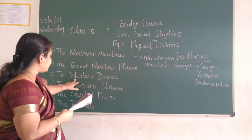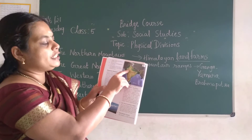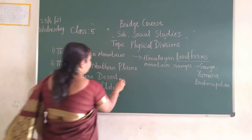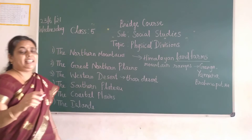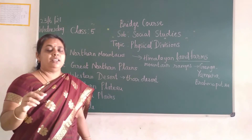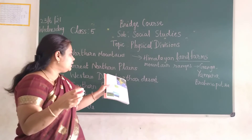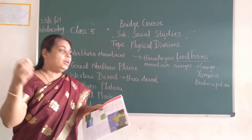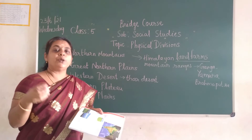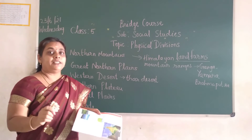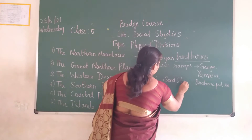The next one is the western desert. On the Indian map, on the western side, you can find the Thar Desert. It has sandy plains and sometimes the sand forms dunes. Sometimes the wind causes sand storms, blowing the sand everywhere — just like cyclones come from the sea, in the desert you get sand storms.